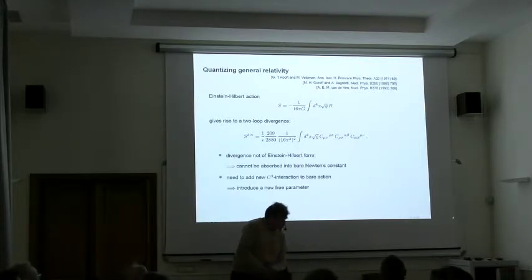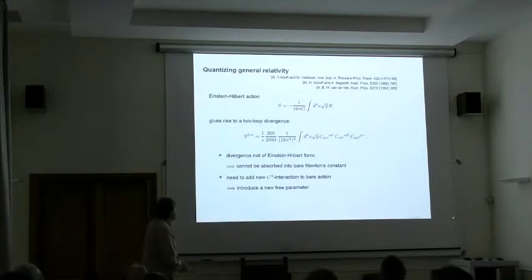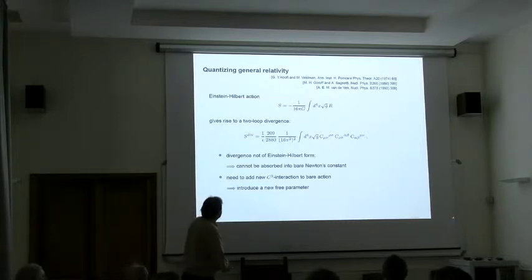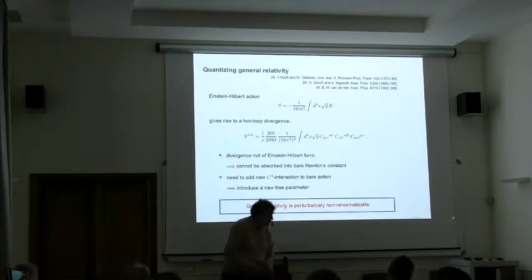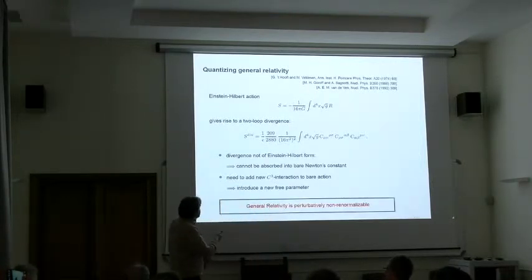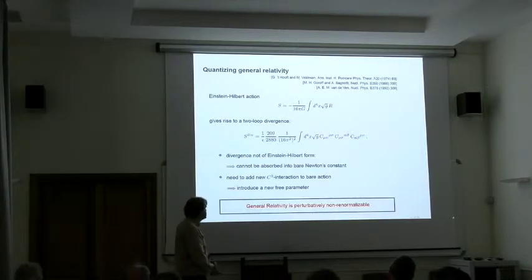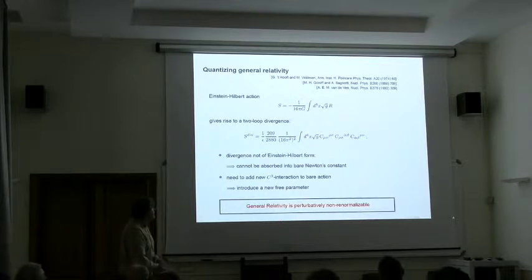This is not of the form of the initial action. You cannot reabsorb this divergence in a redefinition of Newton's constant. Then, what could you do? You can add the C squared term to your initial action. This will introduce a new free parameter, and this is the onset of trouble. In general, it is expected that this is only the first counter term that appears in this series. You will probably need an infinite number of them. This is the statement that general relativity is a perturbatively non-renormalizable theory.